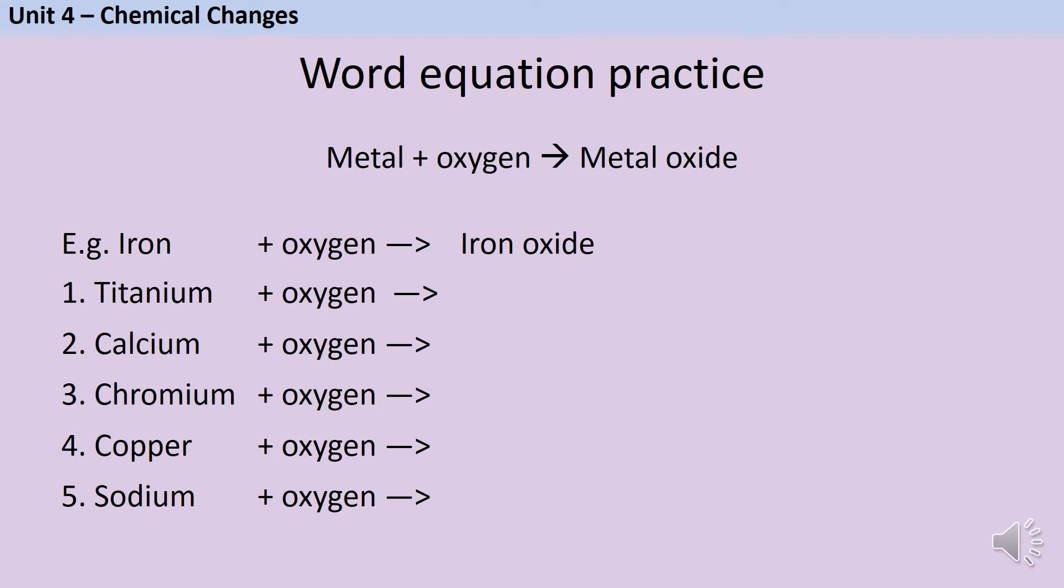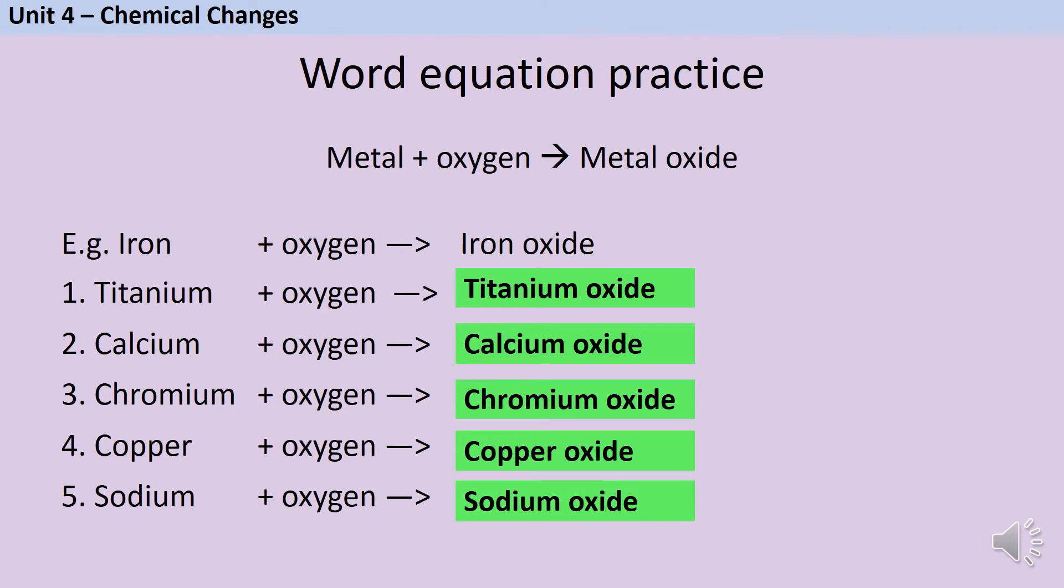For GCSE chemistry, you need to be able to write word and symbol equations for all of the reactions that are named in the specification. Let's look at the reactions of metals with oxygen. As we said earlier, this reaction makes a metal oxide. So for any named metal, the product will be that metal with oxide tagged on the end. So iron reacts with oxygen to make iron oxide. Titanium reacts with oxygen to make titanium oxide, calcium reacts with oxygen to make calcium oxide, chromium reacts with oxygen to make chromium oxide, copper reacts with oxygen to make copper oxide, and sodium reacts with oxygen to make sodium oxide. As you can see, there's a pattern to this. And once you know what the pattern is, they can give you the name of literally any metal, and you would know what the product being made was.